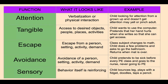The functions of behavior circle around attention, wanting something tangible, wanting to escape, wanting to avoid, or needing some sort of sensory input. Attention is usually verbalization — a child looking for attention that doesn't get it. Access to desired objects, people, places, and activities is a tangible want, like a child wanting to use the computer so they'll pretend their hand hurts when they write. A child escaping or avoiding an activity demonstrates some sort of emotion. Sensory includes children bouncing their leg, playing with a fidget, doodling, or tapping a pencil. All those behaviors have a reason.